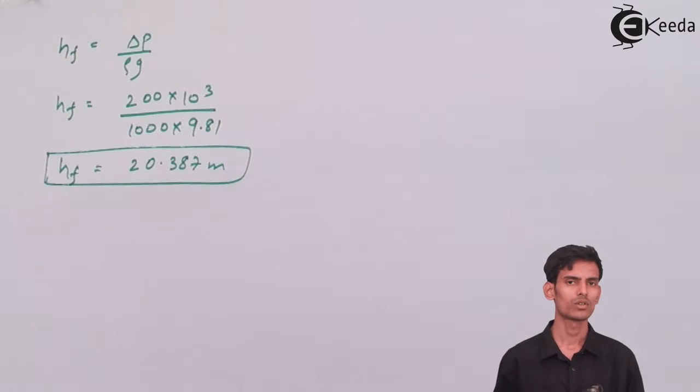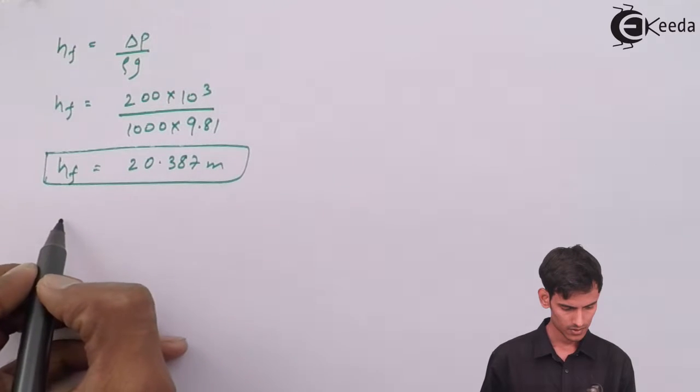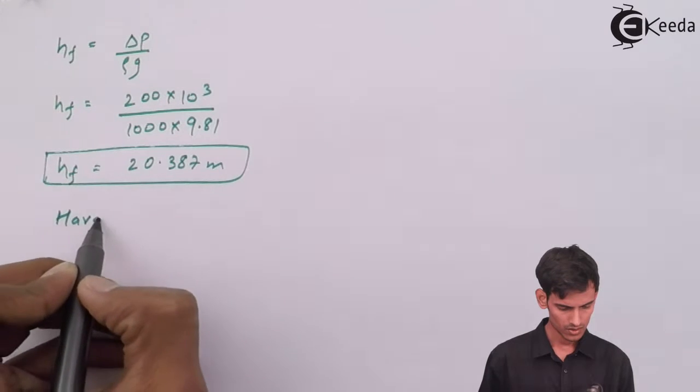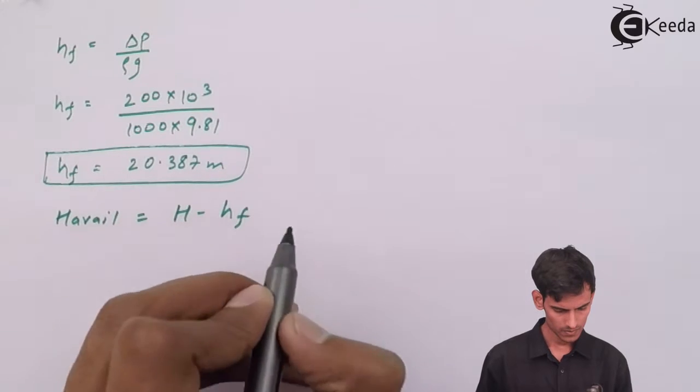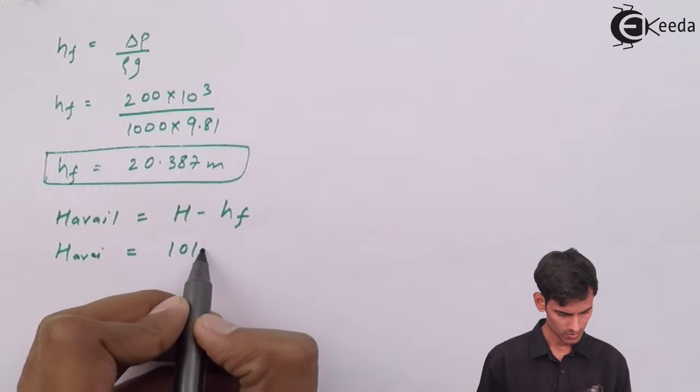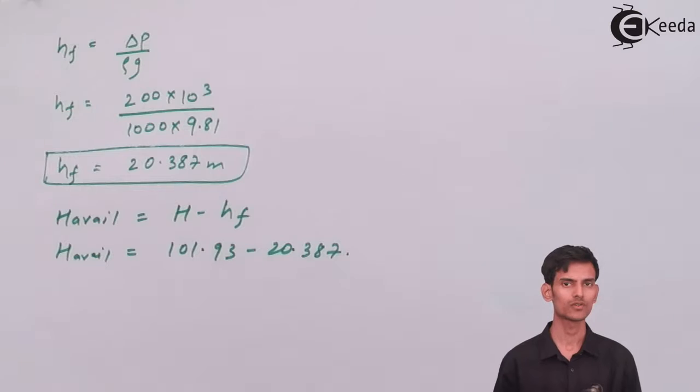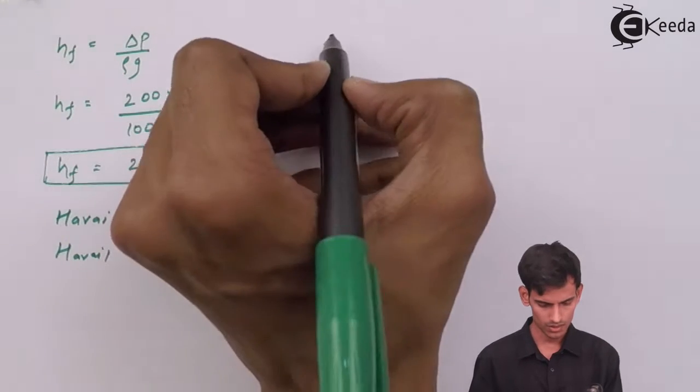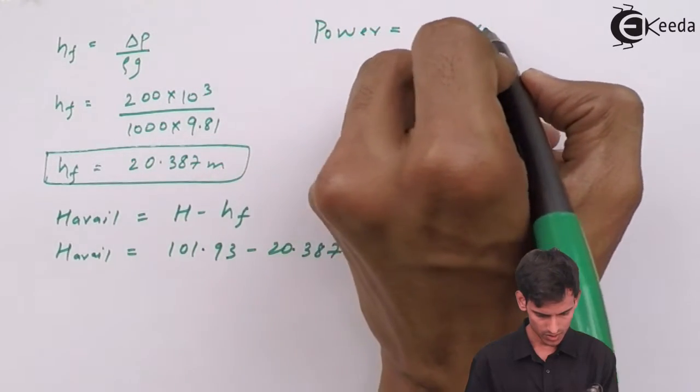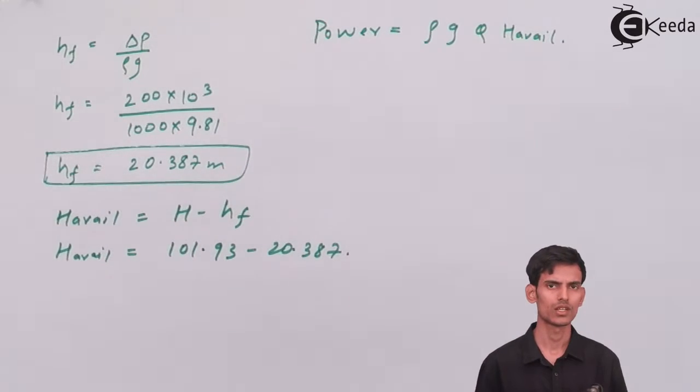Now we know the total head at the inlet and the drop of head because of friction from the pressure drop. Now let's calculate the effective head that is available at the outlet. The available head is nothing but head at inlet minus head loss because of friction. We'll use this available head in the power formula and get the value of the discharge. The power is given as 100 kW, so that is 100 times 10 to the power 3 watts.